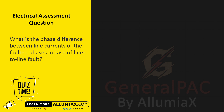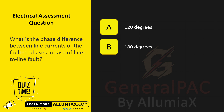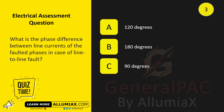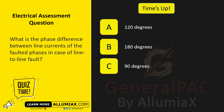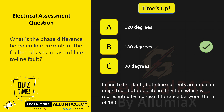What is the phase difference between line currents of faulted phases in case of line-to-line fault? A. 120 degrees. B. 180 degrees. C. 90 degrees. The answer is B — 180 degrees. In line-to-line fault, both line currents are equal in magnitude but opposite in direction, which is represented by a phase difference of 180 degrees.